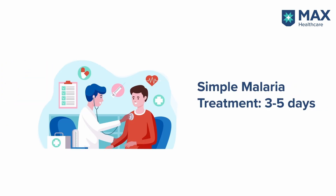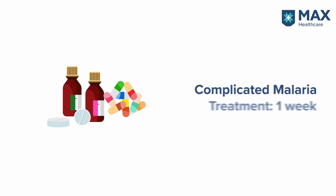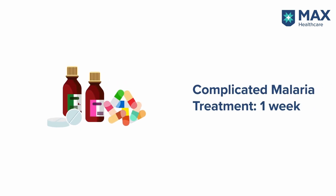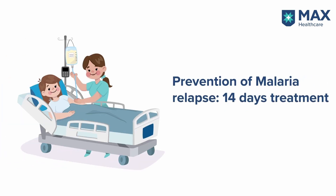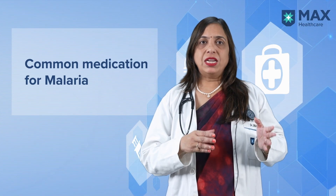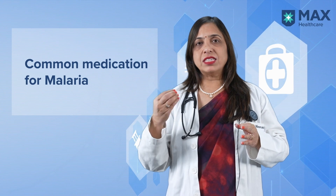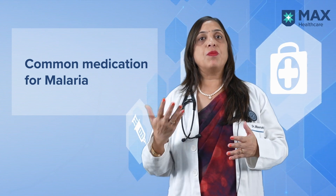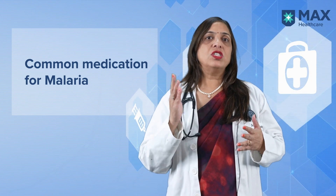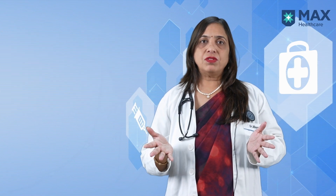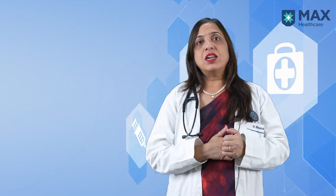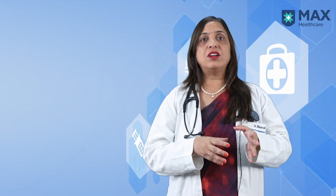Treatment of simple malaria classically lasts for 3 to 5 days. For complicated malaria, treatment may last for a week's duration. For prevention of relapse, treatment is classically for 14 days. There are now cases of malaria becoming resistant to the basic drug we have been prescribing for centuries. For simple malaria, the simple drugs are generally given, but in areas with resistance, a combination of higher-end medicines is used.